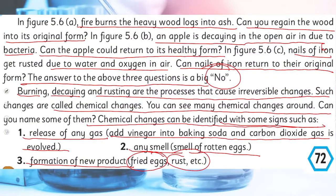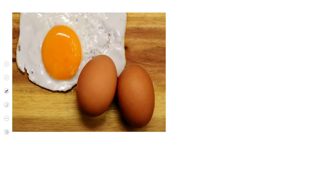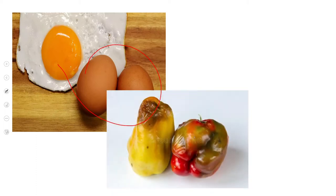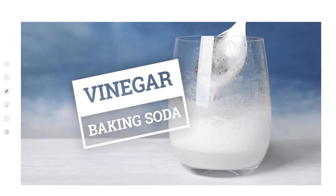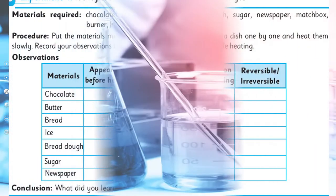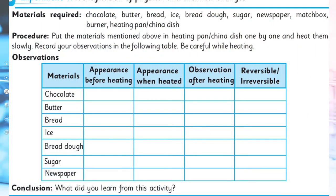This was the experiment. Also look — fried eggs cannot turn back to their original form; rotten vegetables and eggs cannot become fresh again. When you eat food, it gets digested and you cannot get it back in its original form. I added baking soda to the vinegar and gas was released — a new product was formed. This is also a chemical reaction.